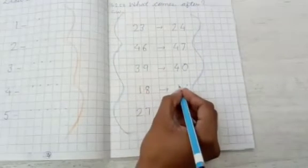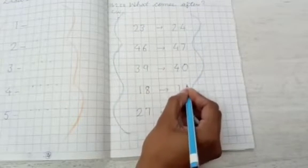Next number is 1, 8 - 18. 18 after? 17, 18, and 19. So write here 1, 9 - 19.